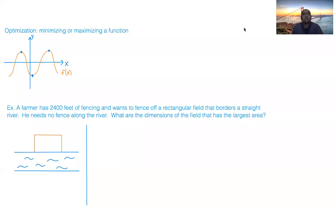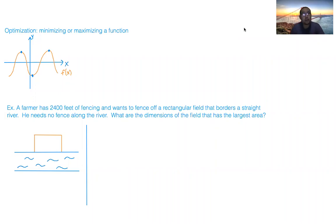Let's talk about optimization. The simplest way to think about optimization is that you're going to be minimizing or maximizing a function — basically what you were doing when you were assessing critical values.